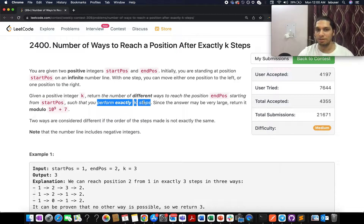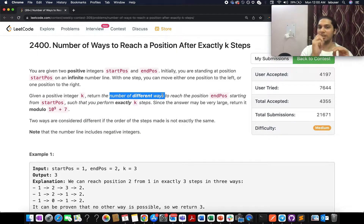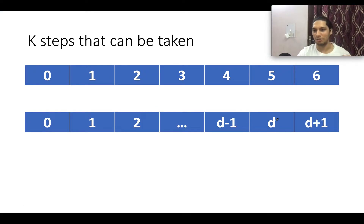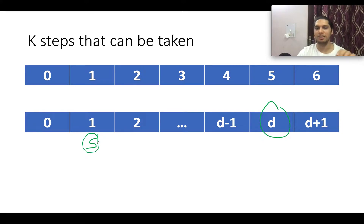The crux of the problem is to count the number of different ways to reach the destination position. It is not asking whether it's possible to reach the position in k steps or not — that makes the question more interesting. You need to count the number of ways to reach the destination from the source in exactly k steps.